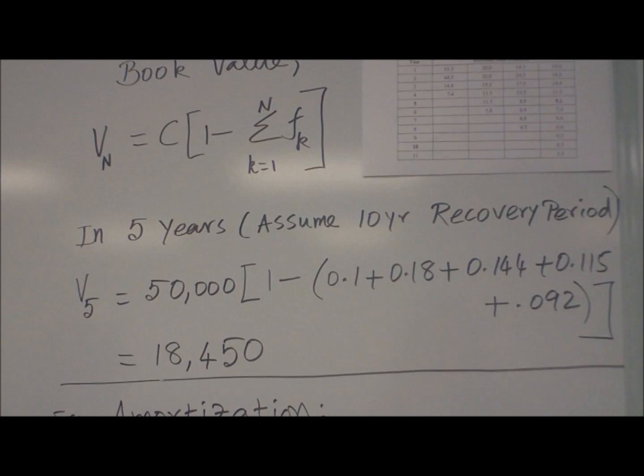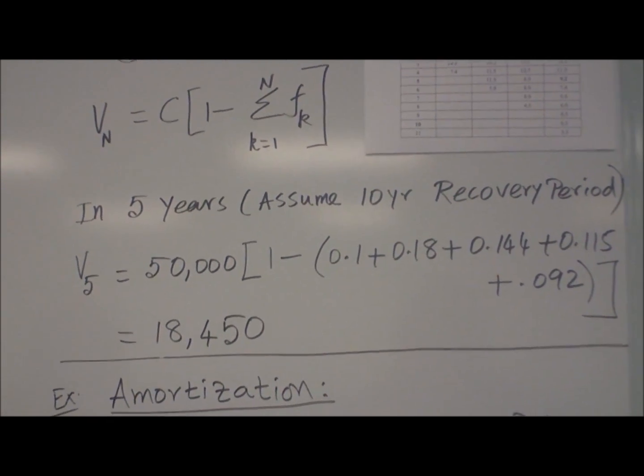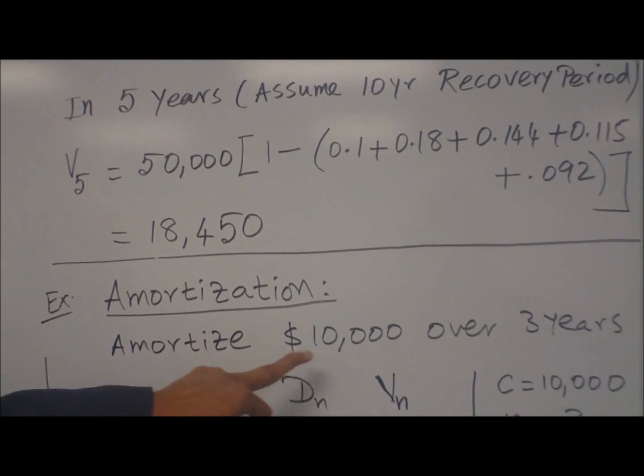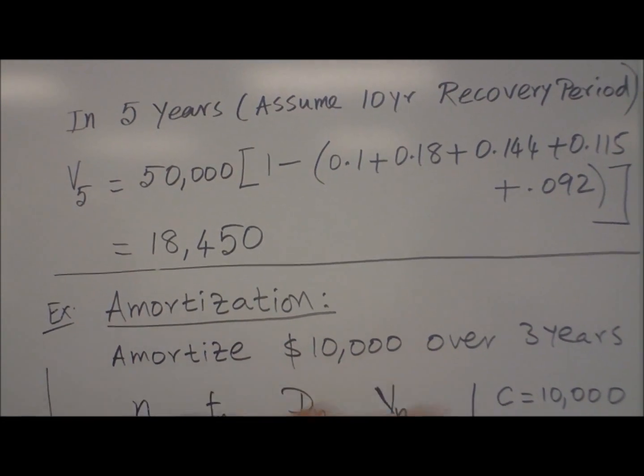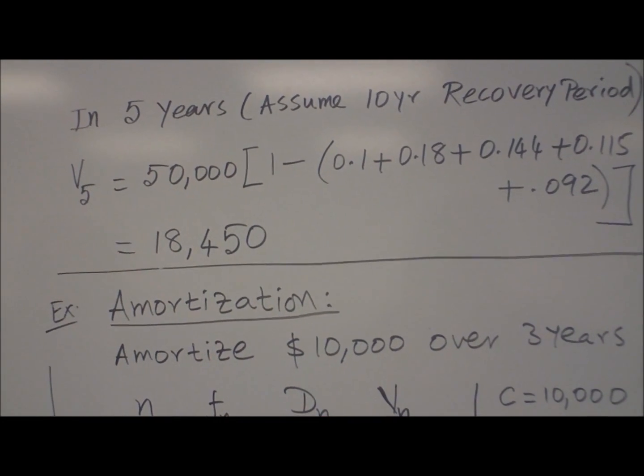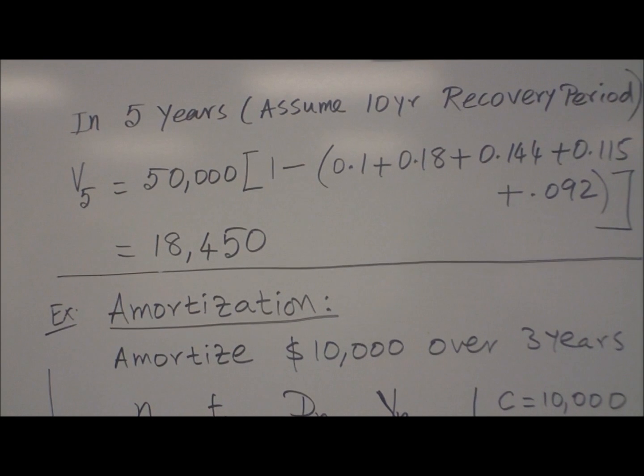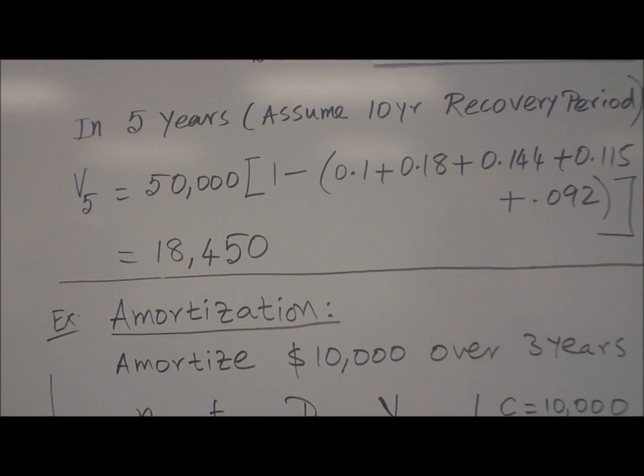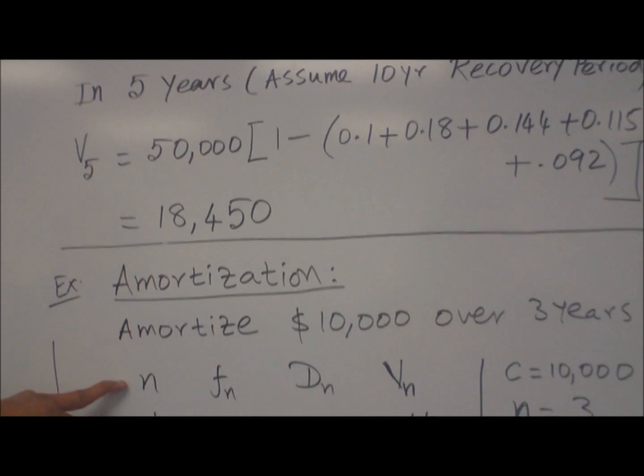We can also find amortization. Amortization, let us say $10,000 you have amortized over 3 years. What is amortization? Depreciate such that it reduces to zero book value.